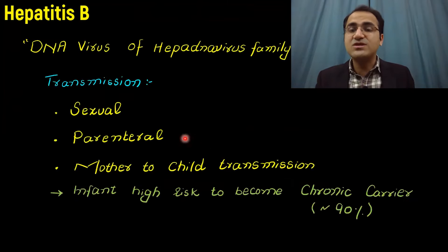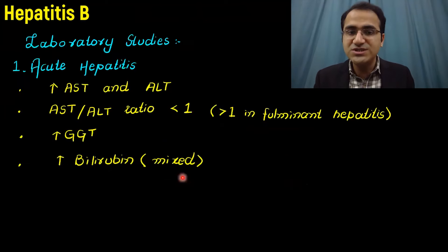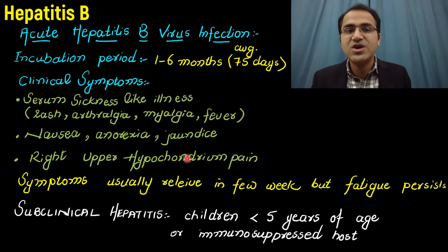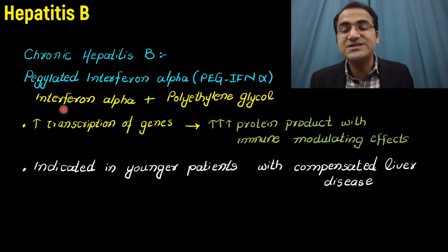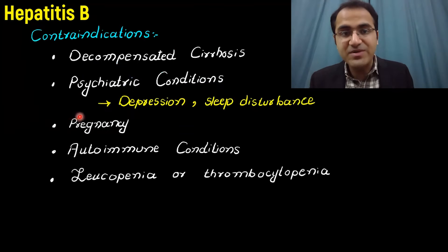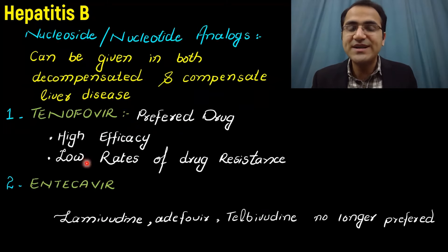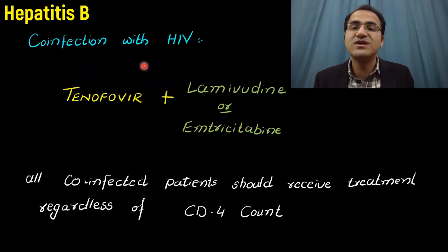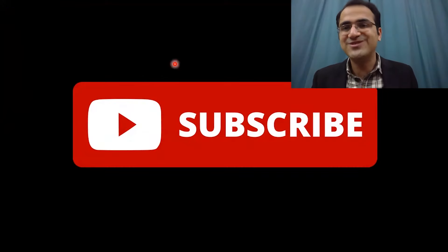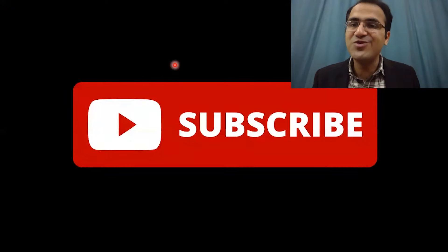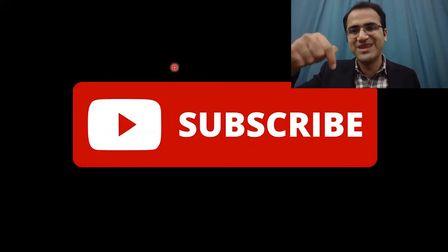In summary, we covered transmission, screening and diagnosis, serology, lab studies, AASLD guidelines for both HBeAg-positive and HBeAg-negative cases, pegylated interferon alpha for chronic hepatitis treatment with its contraindications and adverse effects, tenofovir and entecavir as nucleotide analogues, and treatment of hepatitis B with HIV co-infection. Please click subscribe and check out other videos on infectious medicine.